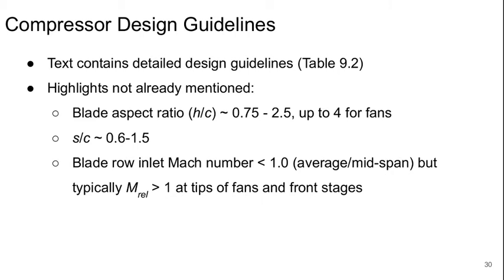Now let's get into some design guidelines for compressors. There are detailed design guidelines in table 9.2 in the text, but some highlights are that the blade aspect ratio is usually between 0.75 and 2.5, more commonly between 1 and 1.5, but can be as high as 4 for fans. The pitch to chord ratio is usually about 0.6 to 1.5. The blade row inlet Mach numbers typically should be less than 1 at least at mid-span, but typically the relative Mach number at the tip for fans and the front few compressor stages will be supersonic.